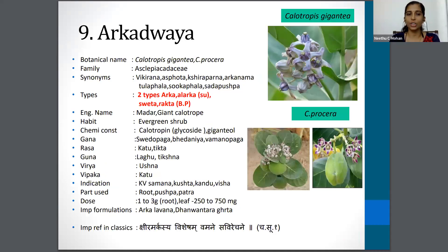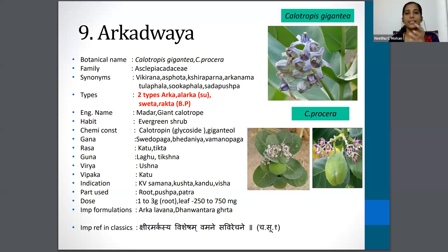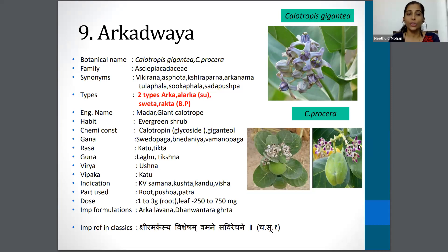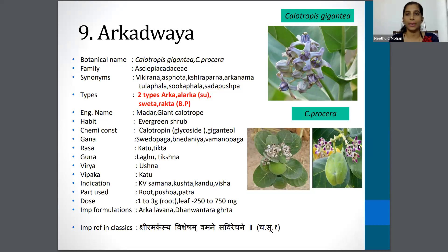The next one is Arka Dvaya — Calotropis gigantea or Calotropis procera, Asclepiadaceae family. Synonyms are Alarka, Shiraparna, Arkanama, Shukaphala, Sadapushpa, etc. There are two types of Arka mentioned in classics: according to Sushruta it is Arka and Alarka, and according to Bhavaprakasha it is Shveta and Rakta. The part used is root, Pushpa, and Patra. If root, dosage is 1 to 3 gram; if leaf, 250 to 750 milligram.